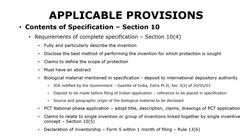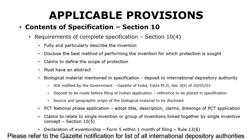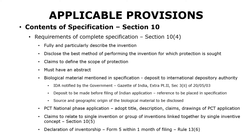If the invention relates to use of any biological material mentioned in the specification, the applicant needs to deposit the biological material with an international depository authority, so it can be referred to during examination. The international depository authorities are notified by the government; the last notification was published in the Gazette of India in 2003, providing details of all notified authorities. The deposit is to be made before filing of the Indian application, and you should place the reference of that deposit in the specification. You also need to specify the source and geographic origin of the biological material used, which must be disclosed in the complete specification.